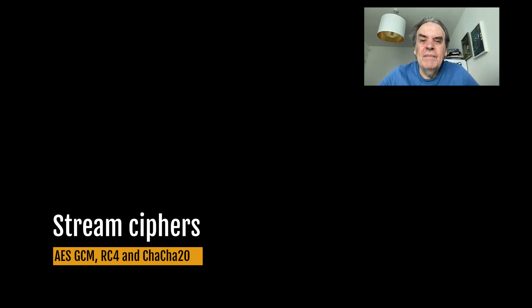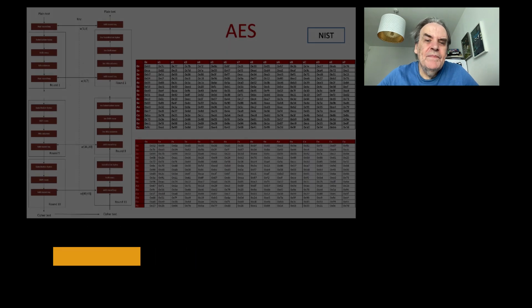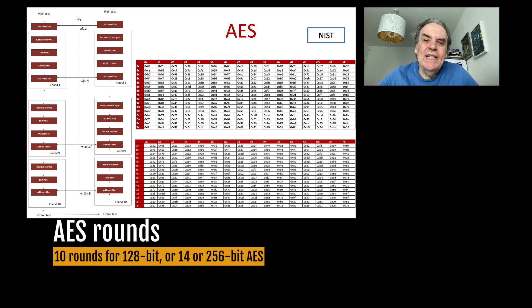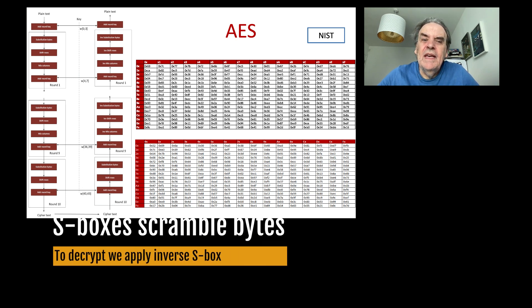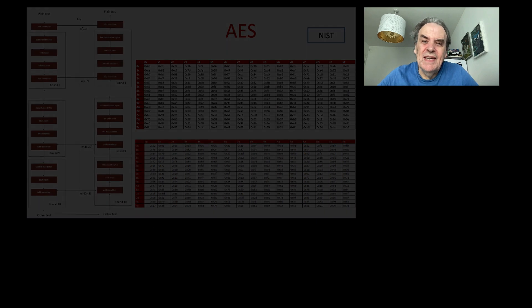In order to enhance security, AES has a number of rounds where parts of the key are applied. With 128-bit AES we have 10 rounds and 14 rounds for 256-bit AES. In AES we use S-boxes to scramble the bytes, which is applied for each round. When decrypting we have the inverse of the S-box that we used in the encryption process.